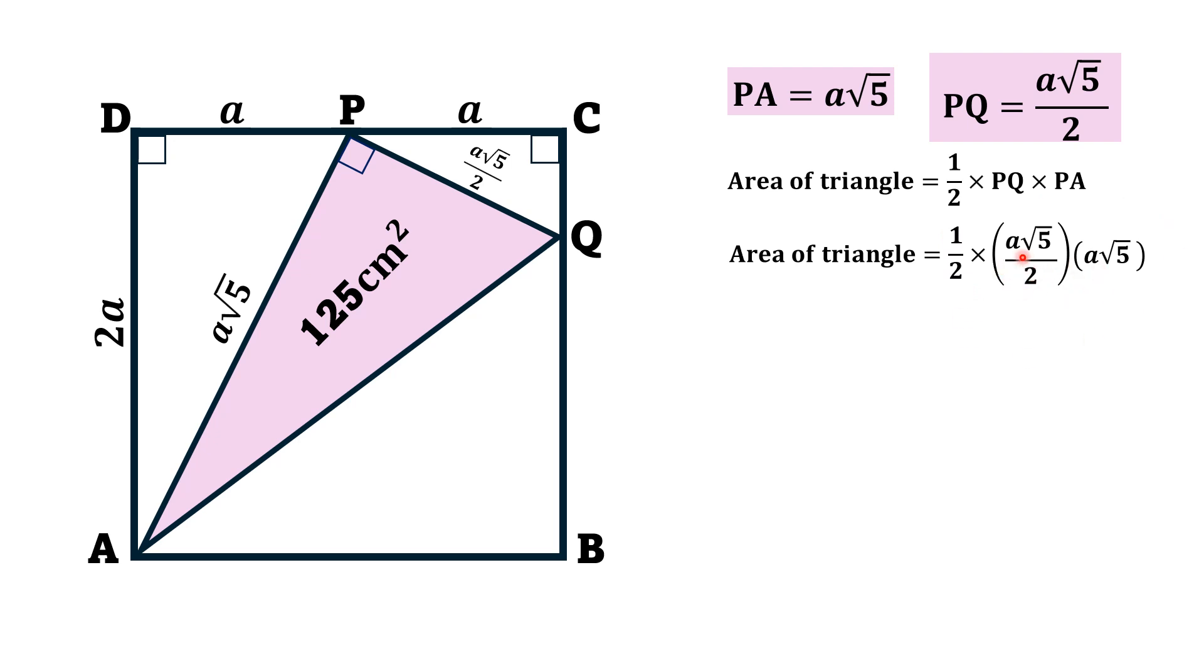In numerator, we will get 5a square, and in denominator, we will get 4, and it is given that area of this triangle is 125 centimeter square. So, 5a square over 4 is equal to 125, and if we multiply with 4, we will get 5a square is equal to 500, and from here, a square is equal to 100.